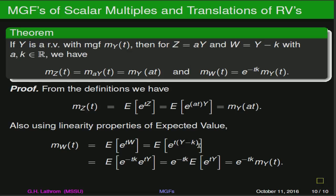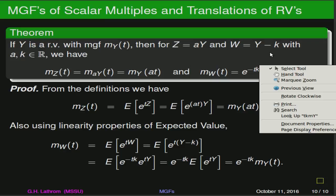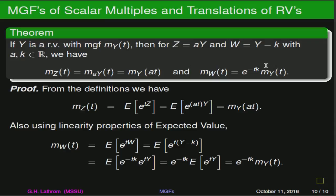The last theorem involves what happens when we do certain transformations of our random variables. If we take random variable y and multiply it by a scalar, so we have a new random variable z equal to a times y, or if we translate our random variable with w equal to y minus k, where a and k are just real numbers — what happens to the moment-generating functions? The moment-generating function for z, which is just a times y, is just the moment-generating function for y with a times t substituted in. The moment-generating function for w, our translation, is the moment-generating function for y times an extra factor of e to the negative tk.